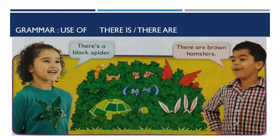Today our topic is the use of 'there is' and 'there are'. Look at the picture. There are some birds or animals in the garden. The girl is talking about those. She says, 'There's a black spider.' Look at the picture — there is one black spider in the grass.